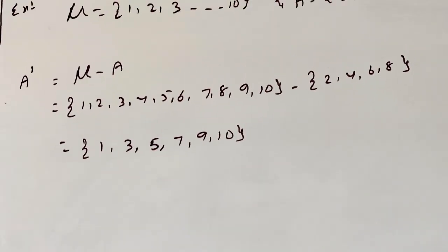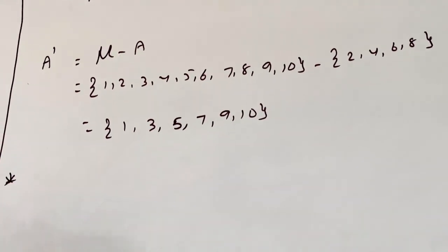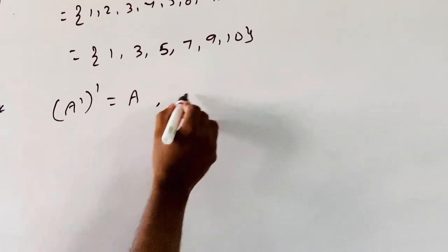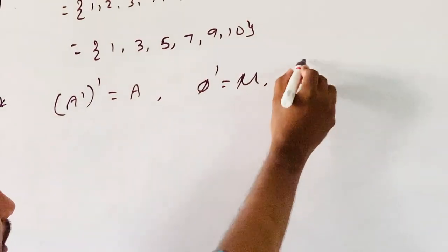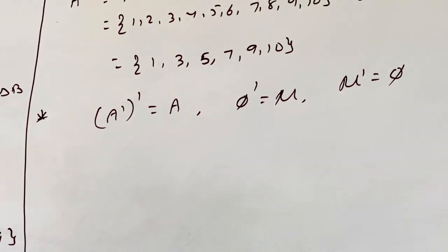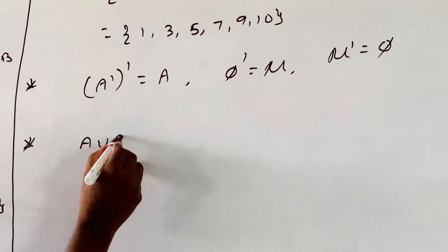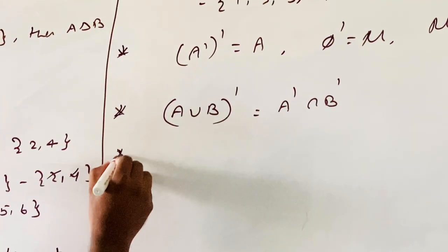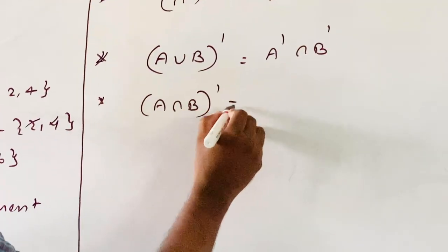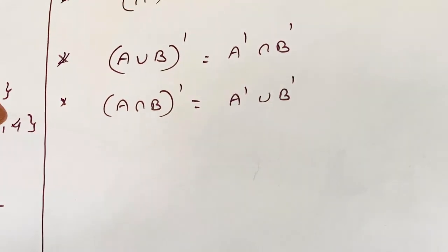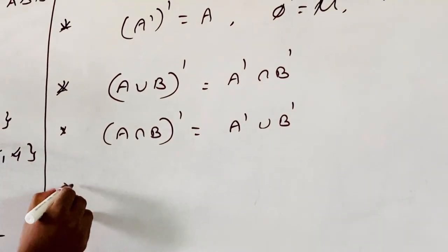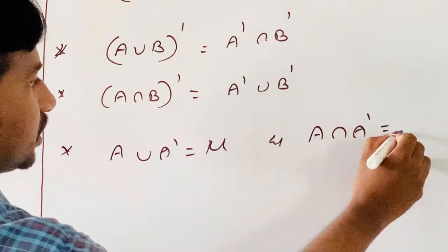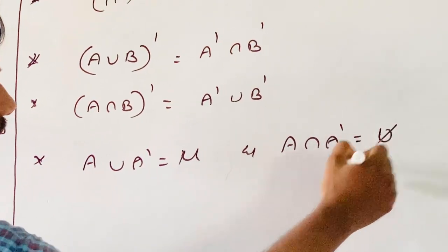Some important results: A double-dash equals A; phi-dash equals mu; mu-dash equals phi. Also, A union A dash equals mu, and A intersection A dash equals phi.